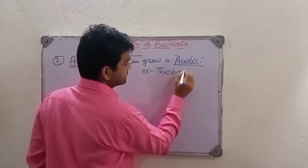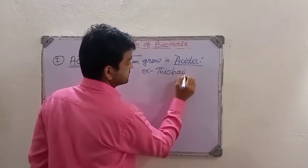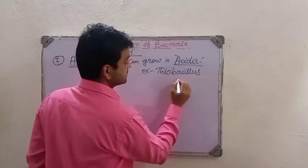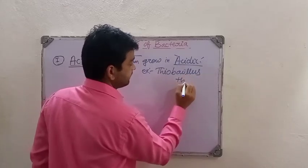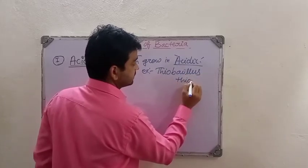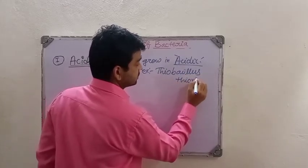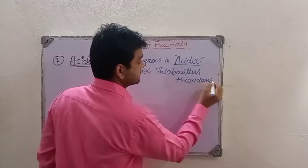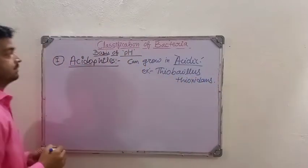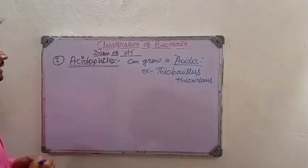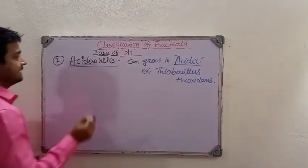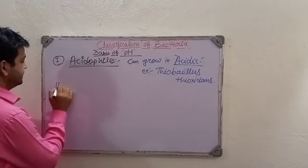Thiobacillus thiooxidans is the example for acidophiles. The second type is the alkaliphiles.